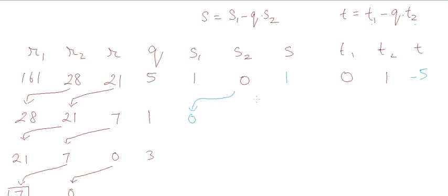For the second iteration, S1 is now 0 and S2 is now 1. T1 is now 1 and T2 is now minus 5. The value of S can be calculated using this formula, which is equal to minus 1. The value of T from this formula will be 6.